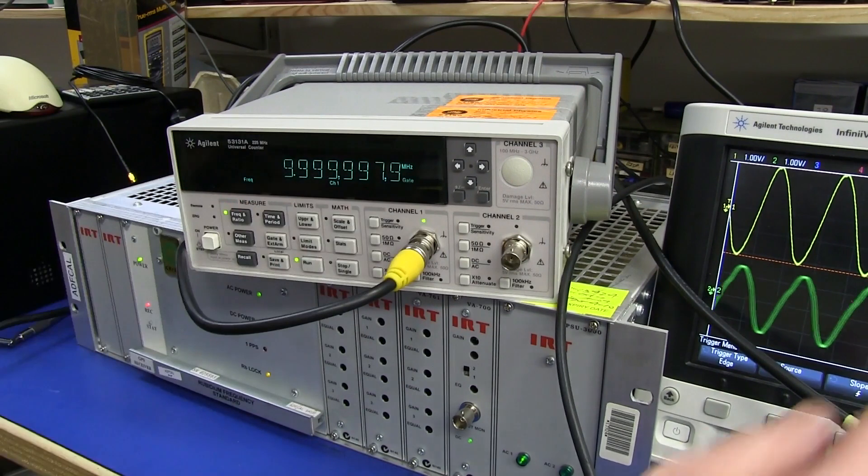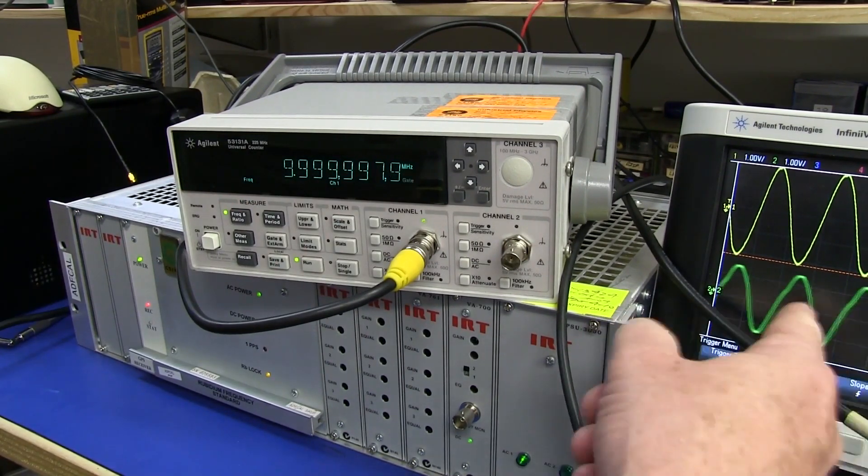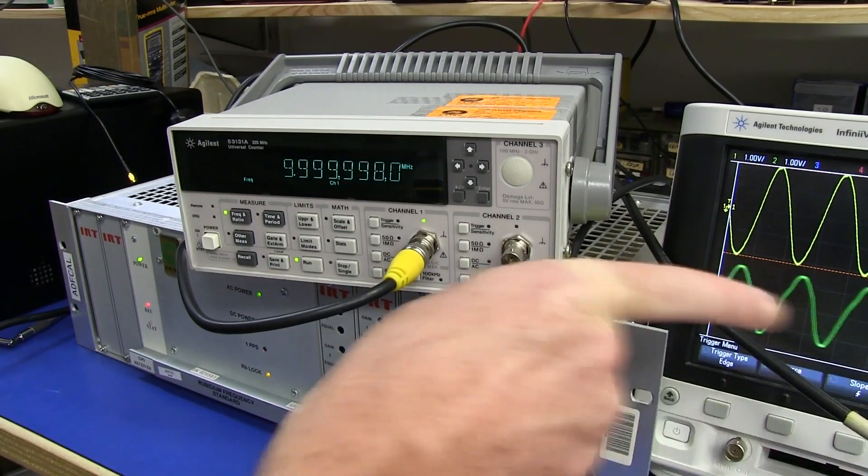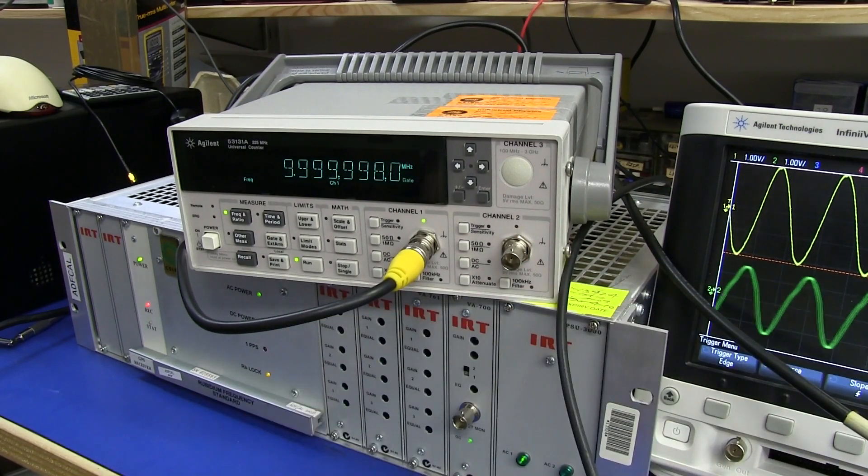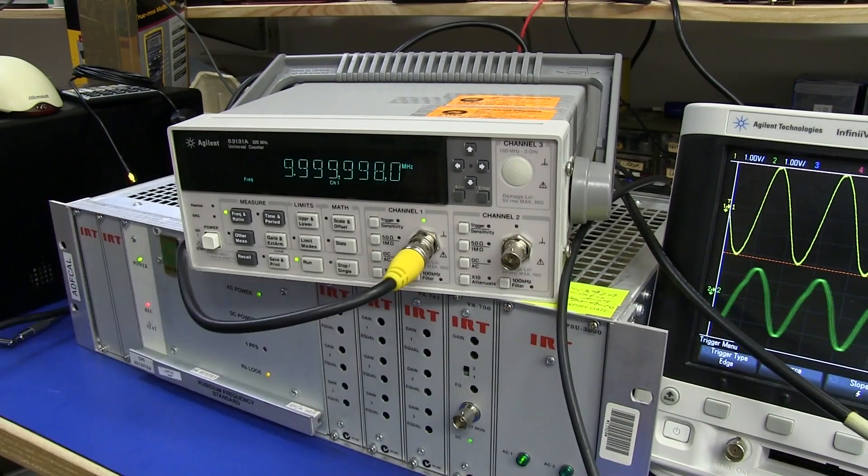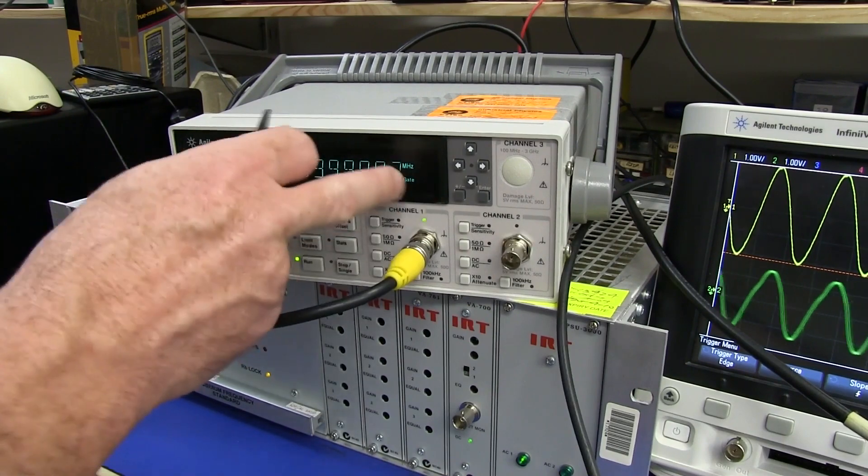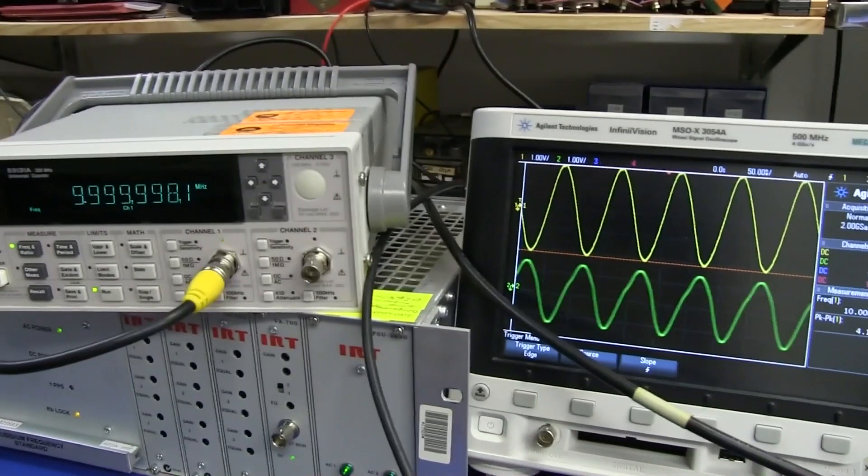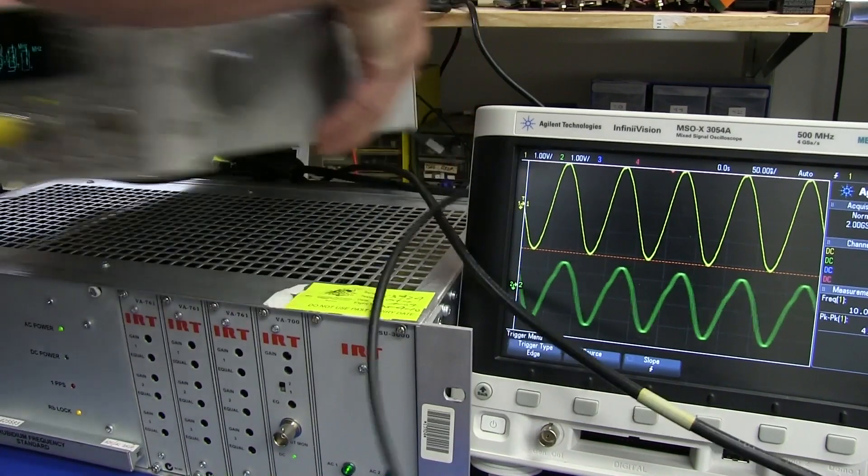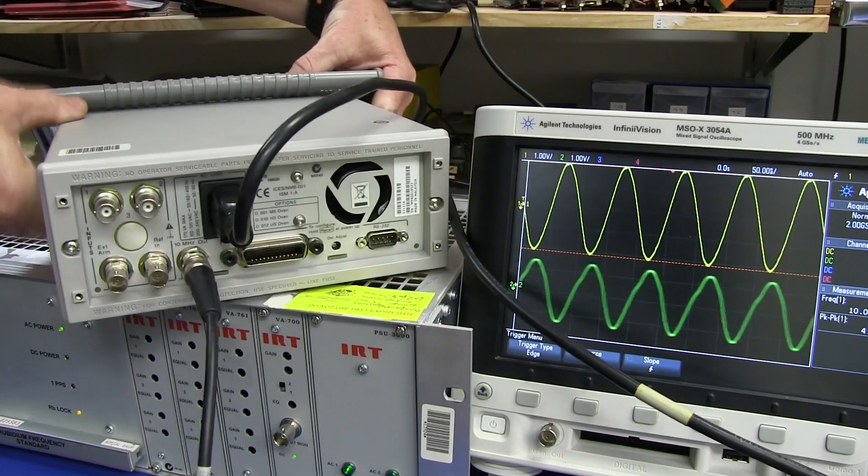It's 2 hertz under because it's going in this direction. If it was going in that direction, then it would be 2 hertz over. So, there you go. You can actually, you don't have to, you don't need a display like this to actually see that. You can just adjust it using a scope like this.